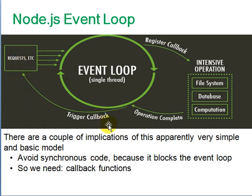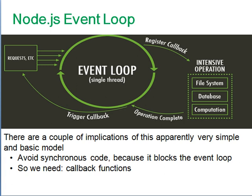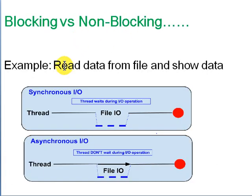The Node.js event loop runs on a single thread. Requests come in, register, and make a callback. The callback interacts with the file system, database, or computation, and when complete, sends data back to the requester. You must avoid synchronous code because it blocks the event loop — instead, supply a callback function that is called when computation is complete.